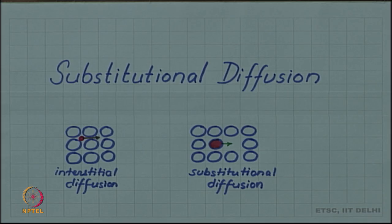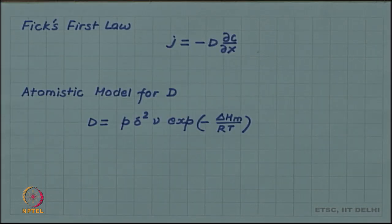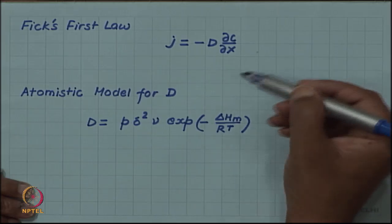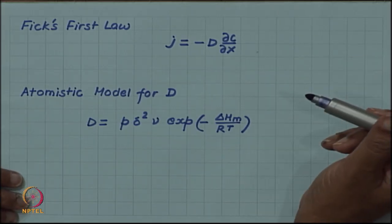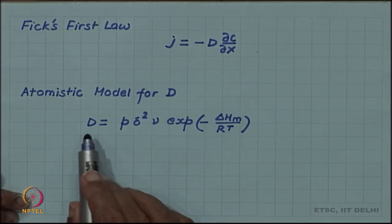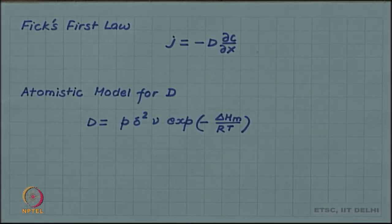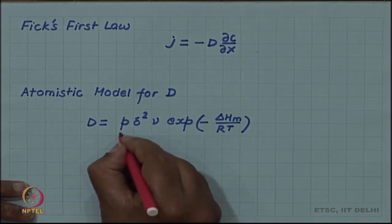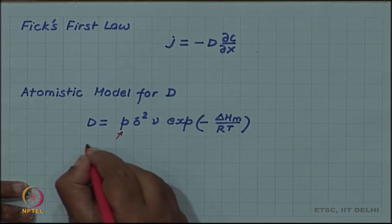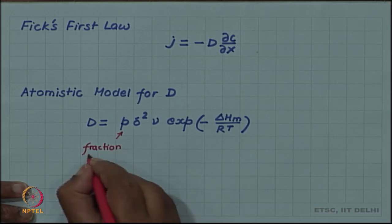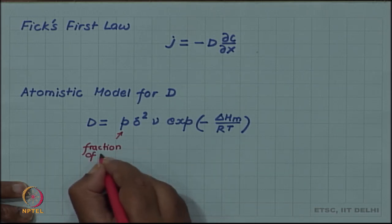We also developed an atomistic model for diffusion in the last video. We essentially derived Fick's first law on the basis of random atomic jumps, and we could show that the diffusivity can be written in terms of atomic parameters, where P is the fraction of successful jumps.